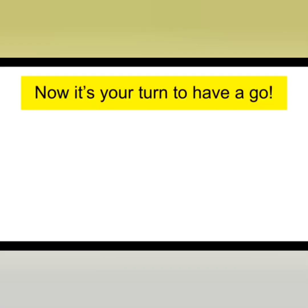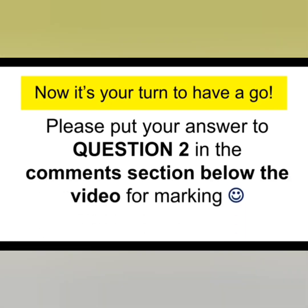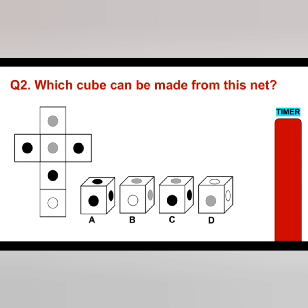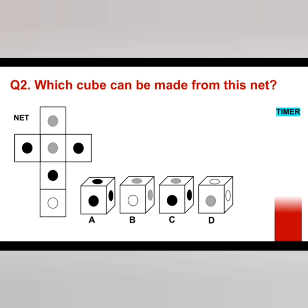Now it's your turn to have a go at a logical reasoning test question. Put your answer to question two in the comments section below the video, and we will come on here each day and mark them for you. I've created a timer on the right-hand side that gives you around 15 seconds to answer the question, which is quite tough, I will admit. If you find you need more time, please do pause the video. Which cube from A, B, C, or D can be made from the net? Don't forget to put your answer in the comments section below the video.